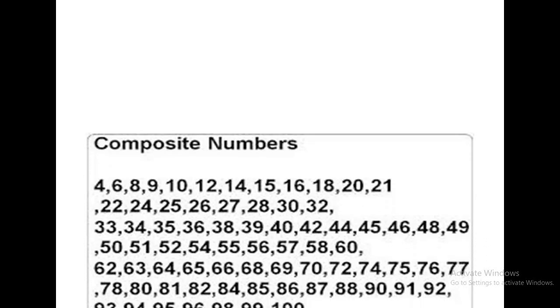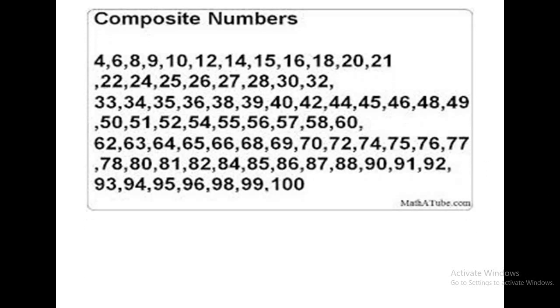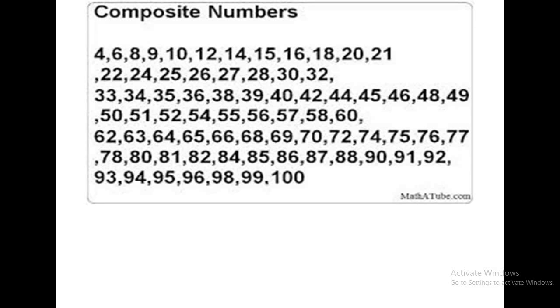Let us see few examples of composite numbers from 1 to 100. Children, all these numbers are having more than 2 factors. That's why these numbers are composite numbers.